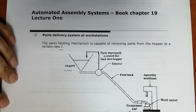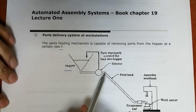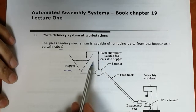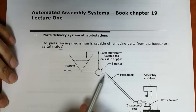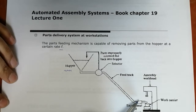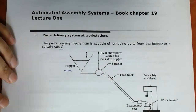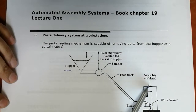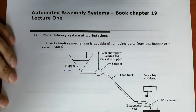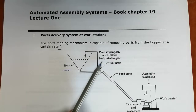The selector/orienter establishes how to place the component in the correct orientation. The parts feeder removes components from the hopper and delivers them to the selector. We then have what is known as a feeder track, which acts like a conveyor, moving units from the selector down to the escapement device or the assembly workhead. The escapement device removes components from the feeder track at time intervals consistent with the cycle time of the assembly workhead.